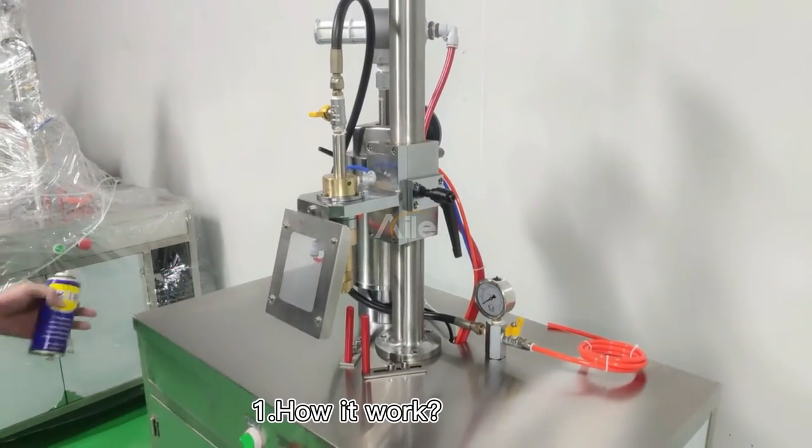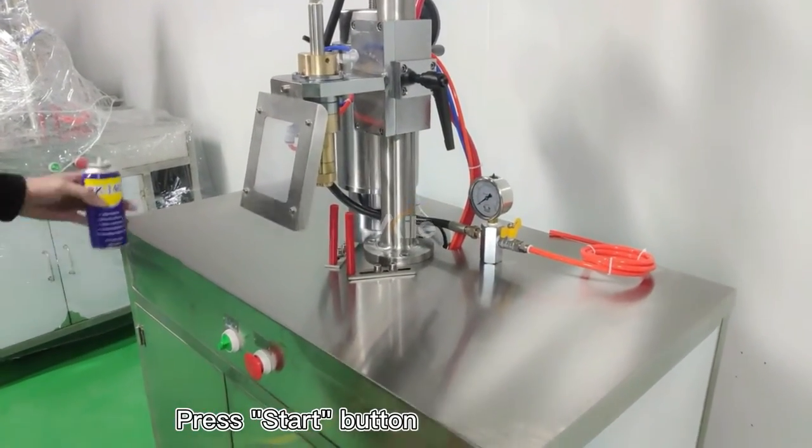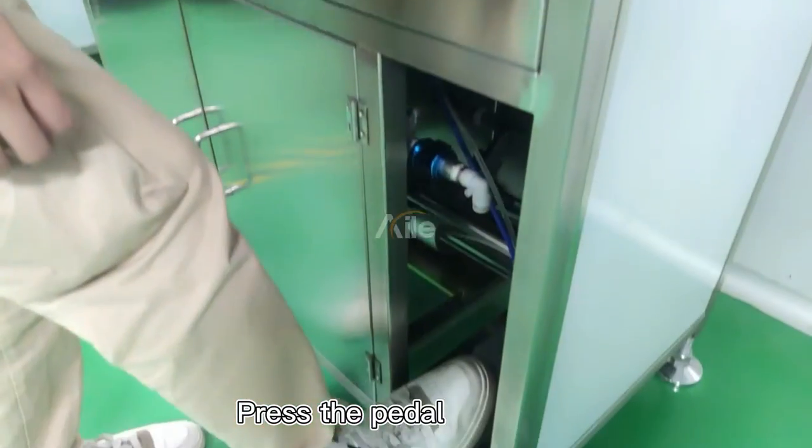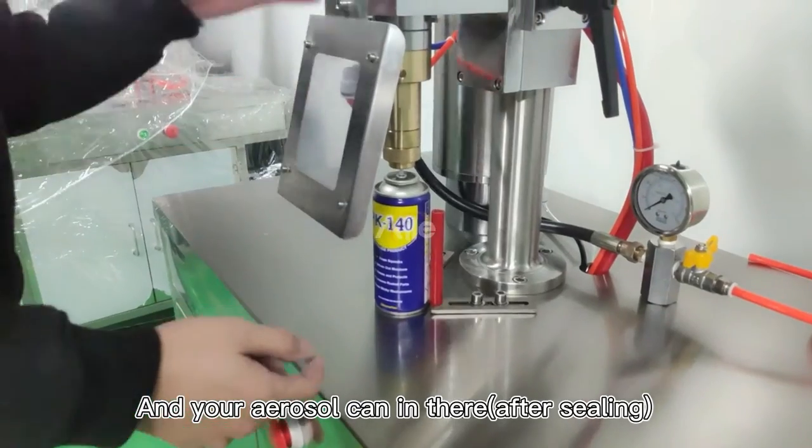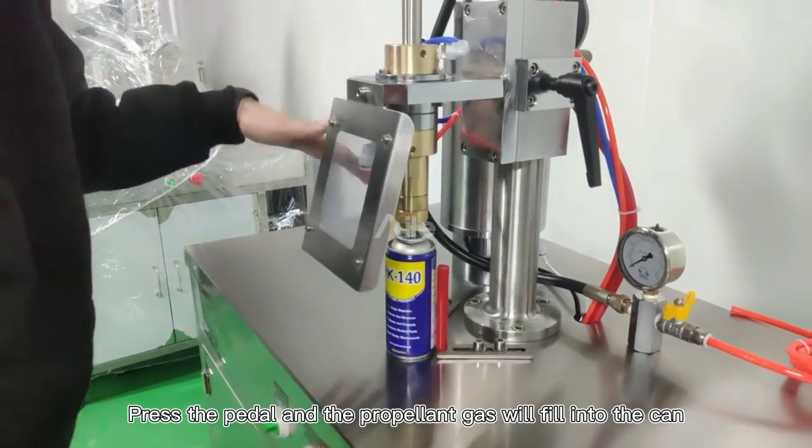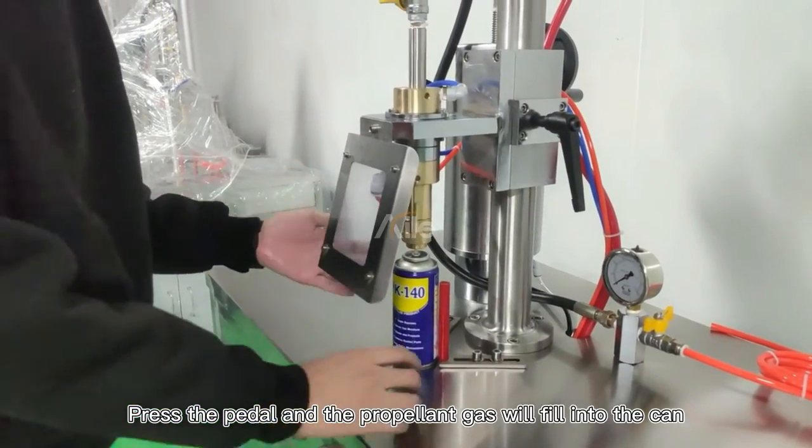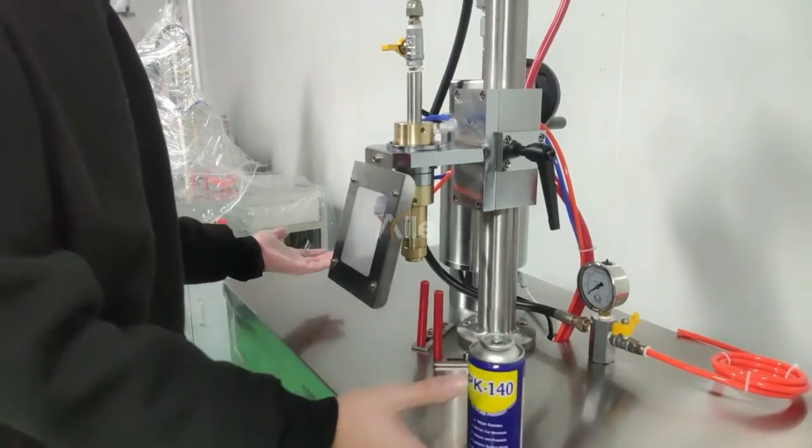So how it works: press the start, press the pedal. When your aerosol can is in there, press the pedal. The gas filling will fill the gas into the aerosol can. Then wait for it to start.